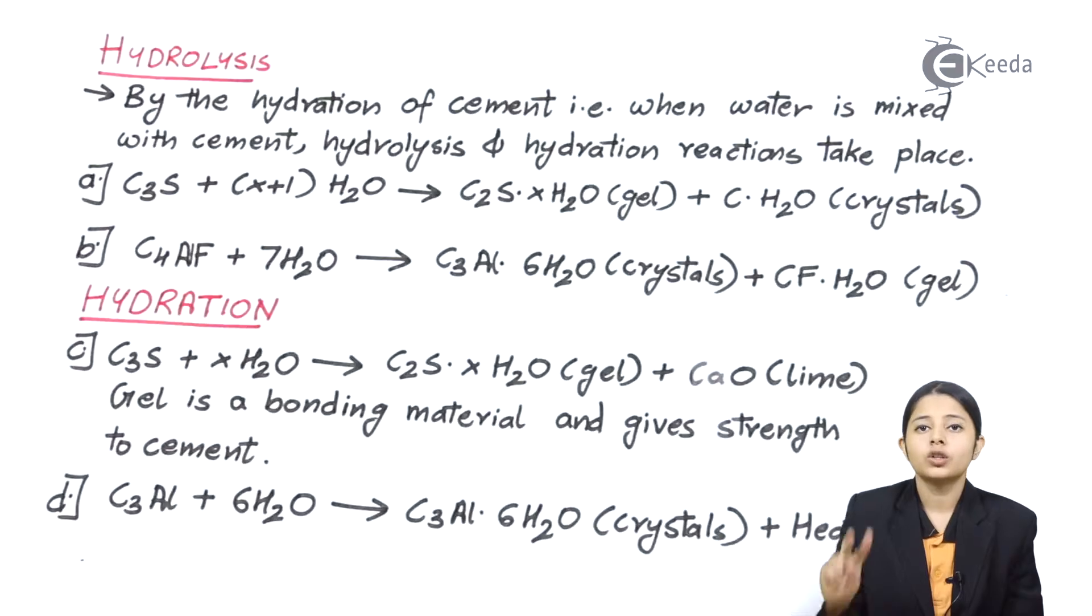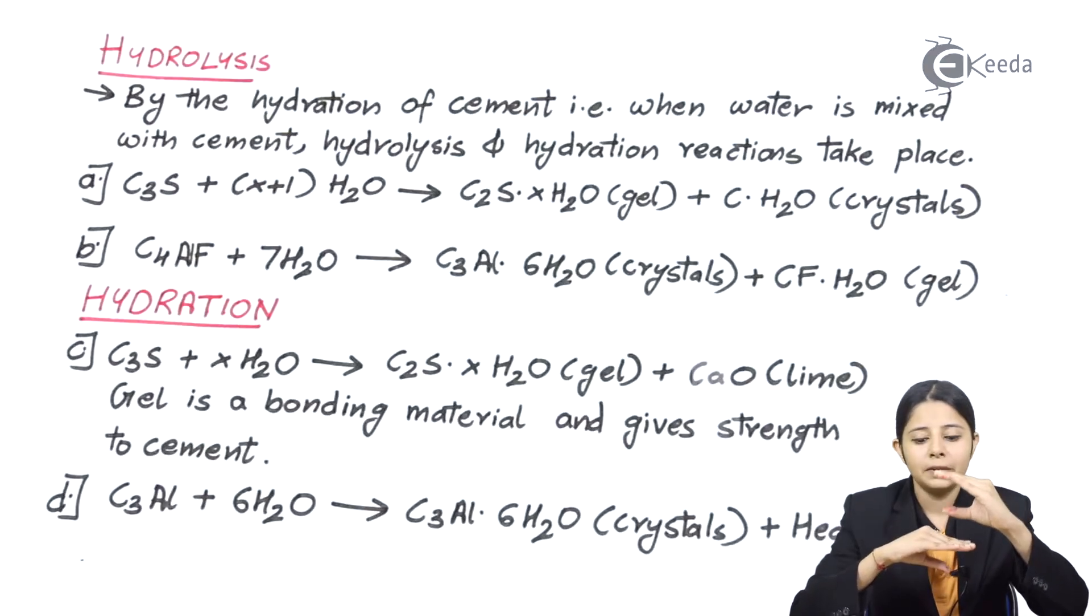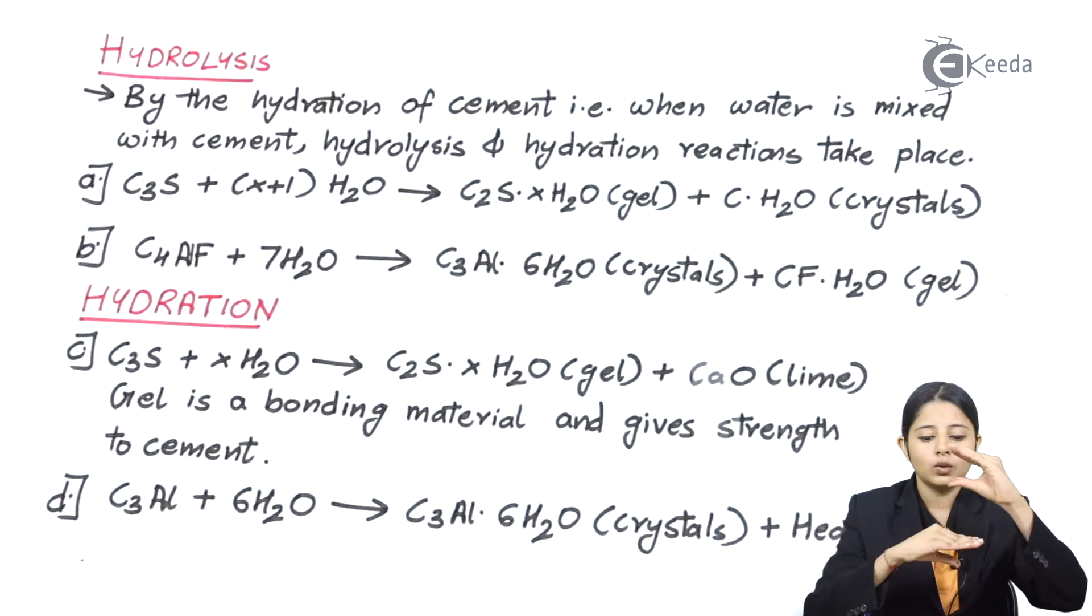We get two forms in the product: gel form and crystal form. The gel form helps in sticking of two things. For example, I have one brick, put a paste of cement and another brick on it. The gel form will help in sticking both the bricks.